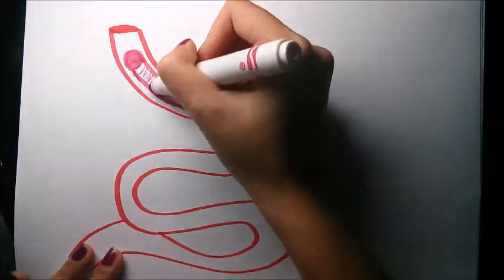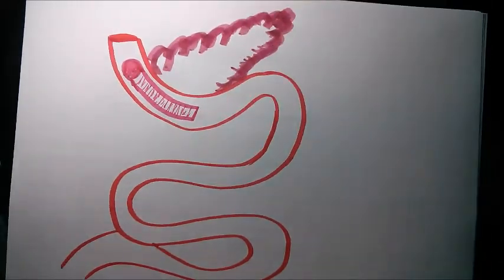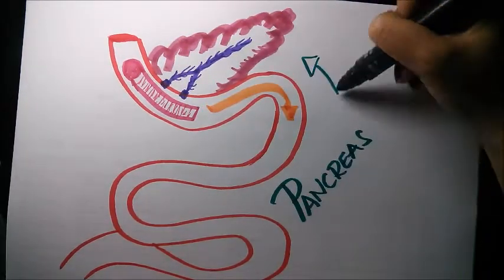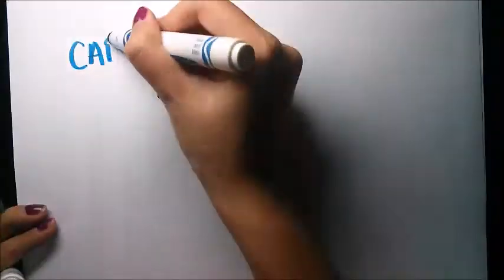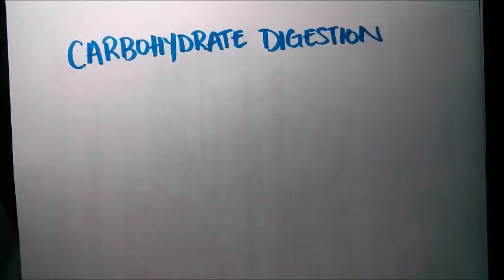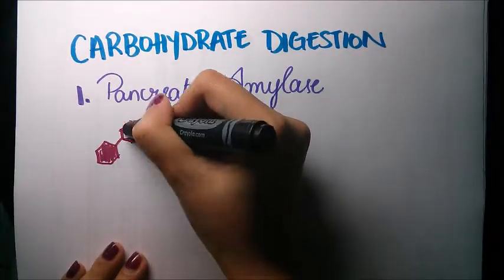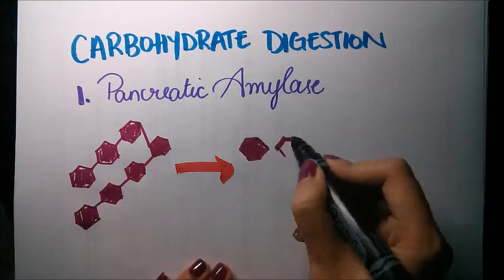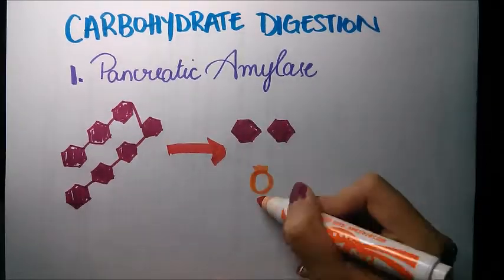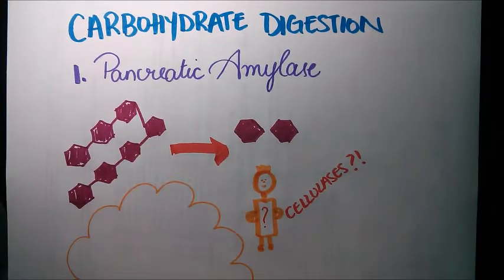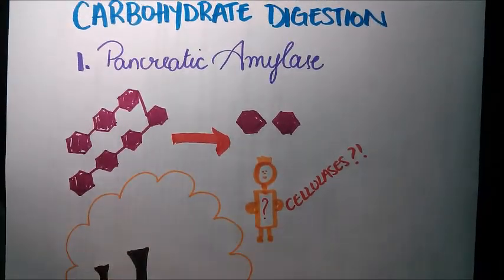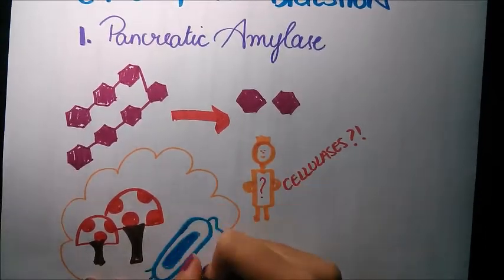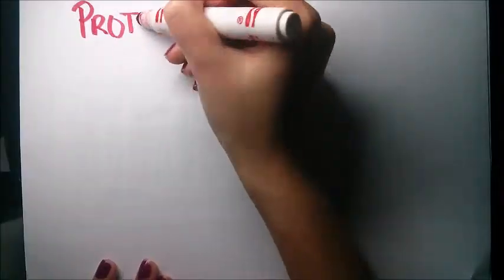The pancreas is located in a visceral or internal region and is a major part of the digestive system, as most of the enzymes required are produced here. It produces pancreatic amylase for carbohydrate digestion, which breaks down starch and glycogen, which are alpha-linked polymers. Humans lack cellulases and cannot digest carbohydrate cellulose, which is a beta-linked glucose polymer.